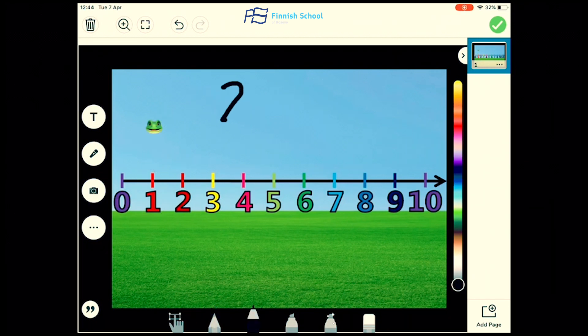Our next addition problem is 2 plus 2. Let's see how much this equals. Froggy has to start on number 2 because that's the first number, so Froggy goes to number 2 and he has two big jumps: one, two. Froggy lands on number 4. So as we see now, we know that 2 plus 2 equals 4.